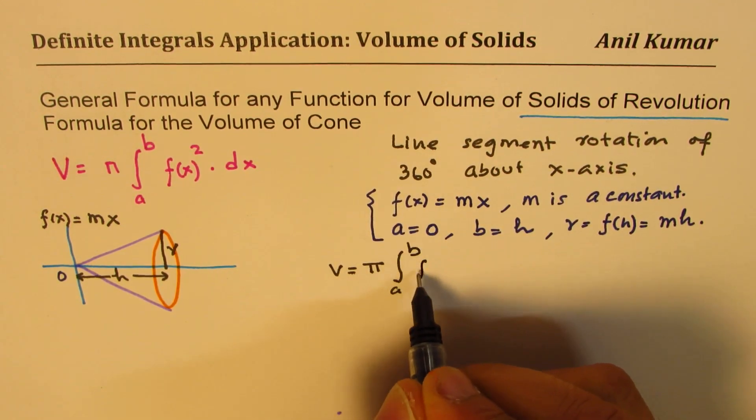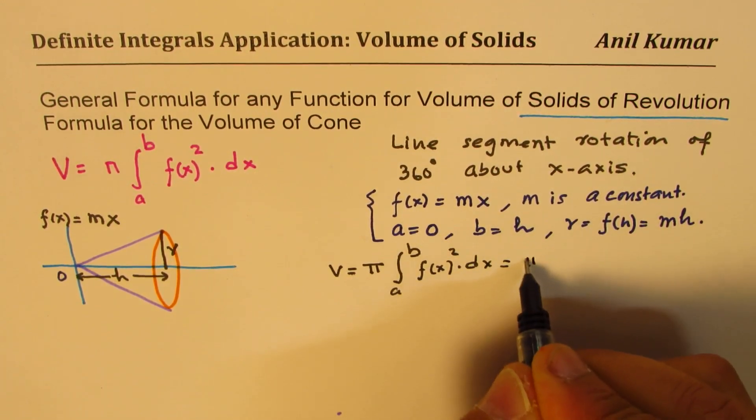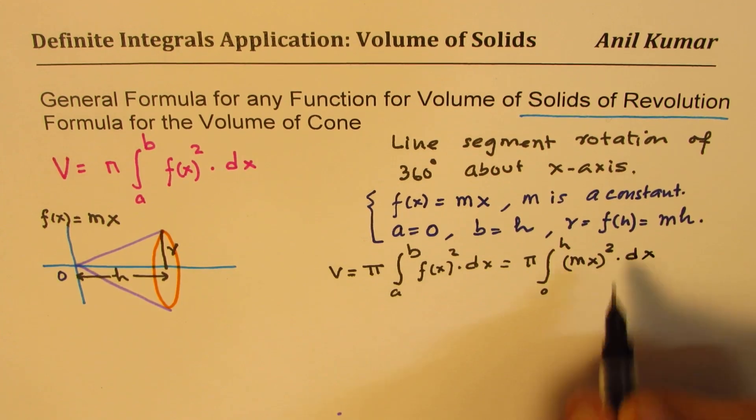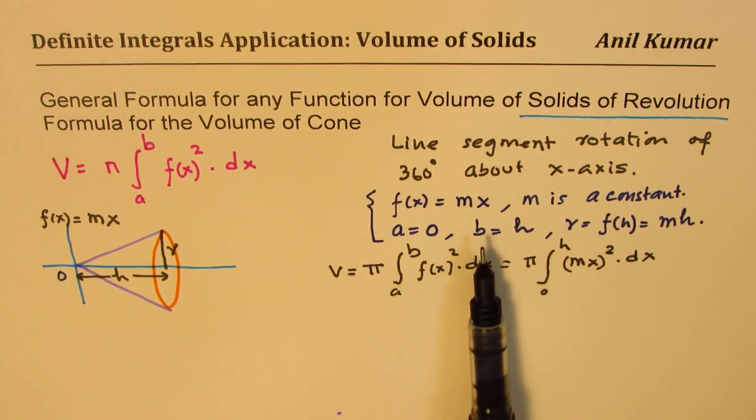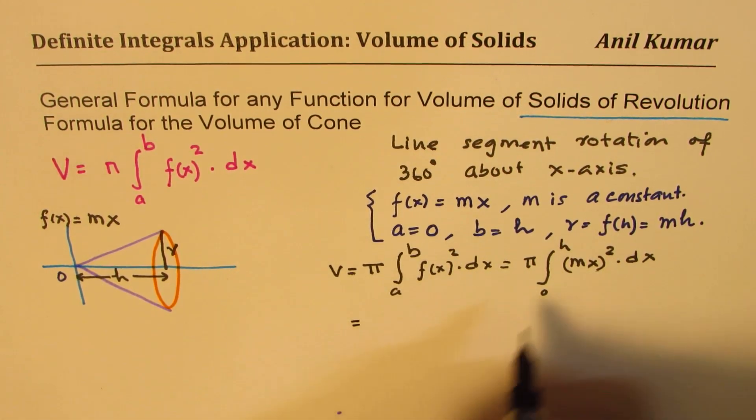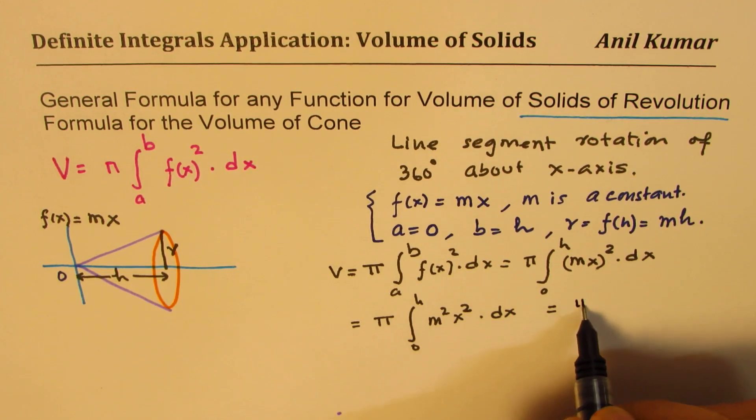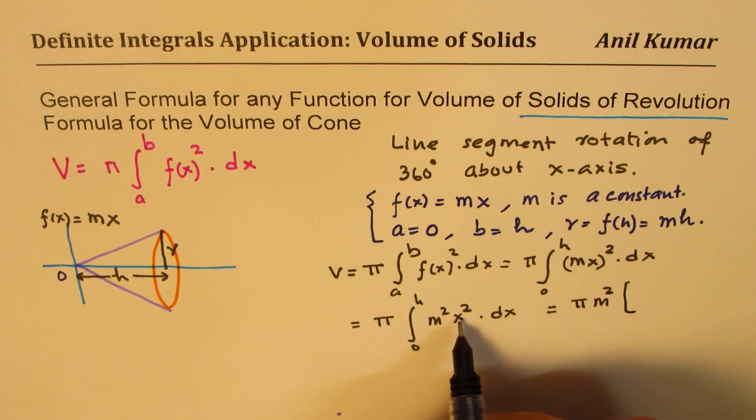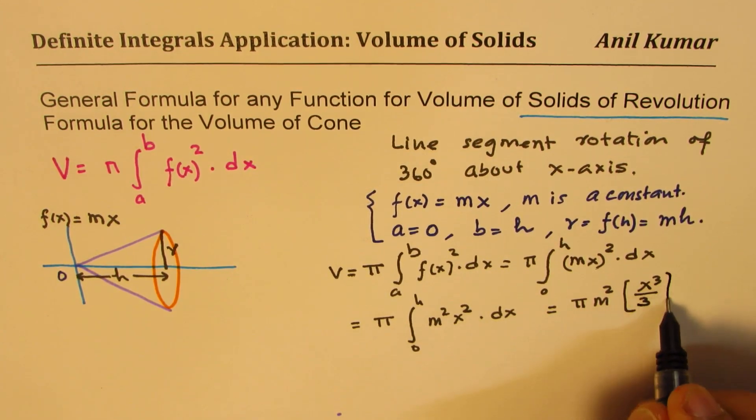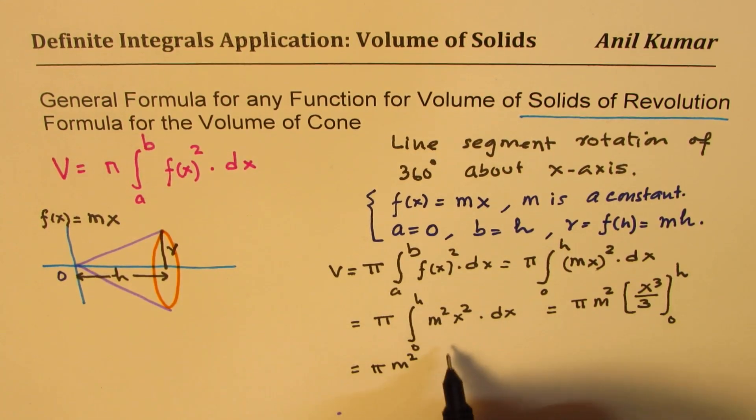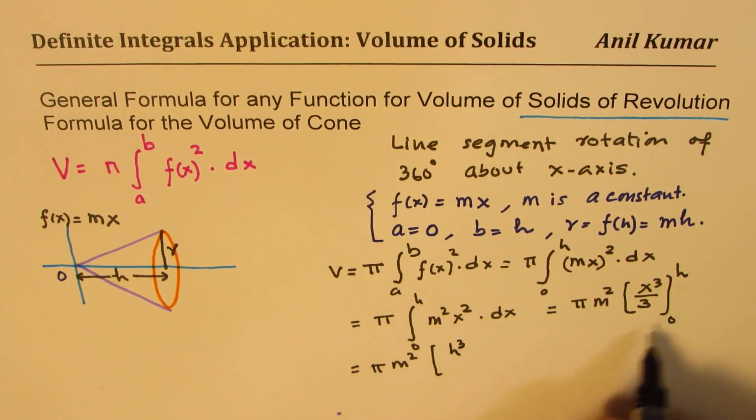So we have all our parameters. Now let's find the volume. Volume is pi integral from a to b of the function squared dx. Replacing the values, we get from 0 to h, the function is mx whole square dx. Pi is a constant, m is also a constant, so we get pi m squared integral 0 to h x squared dx. Integral of x squared is x cubed over 3 over the interval 0 to h.